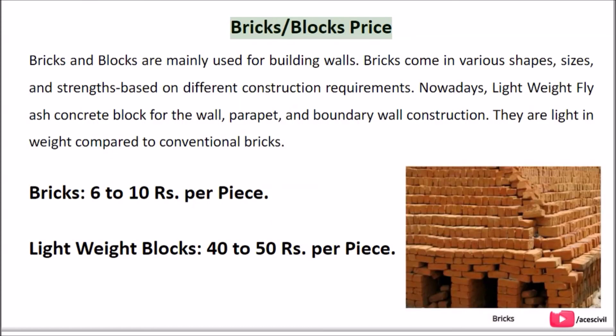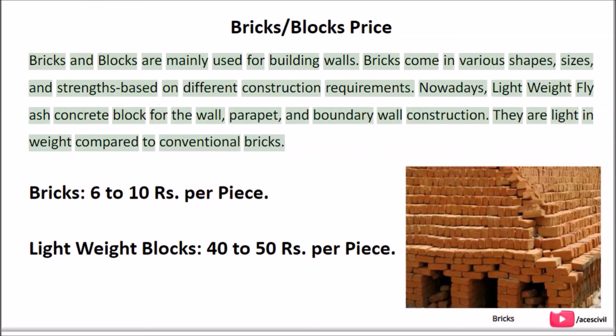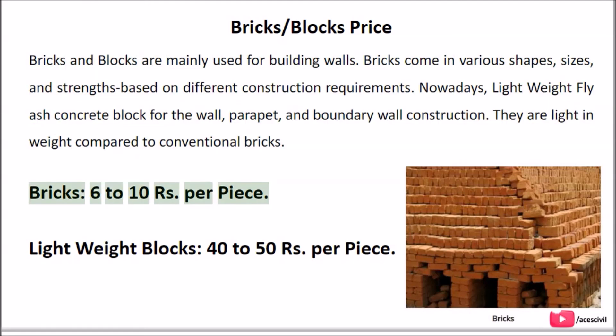Bricks/Blocks Price: Bricks and blocks are mainly used for building walls. Bricks come in various shapes, sizes, and strengths based on different construction requirements. Nowadays, lightweight fly ash concrete blocks are used for wall, parapet, and boundary wall construction. They are light in weight compared to conventional bricks. Bricks: Rs. 6 to 10 per piece. Lightweight blocks: Rs. 40 to 50 per piece.